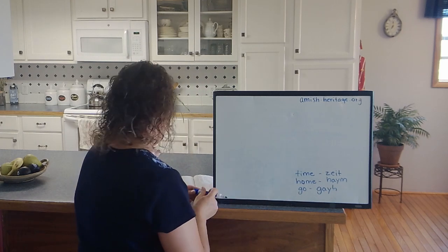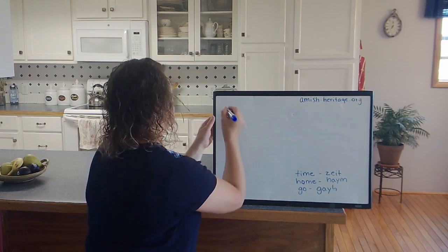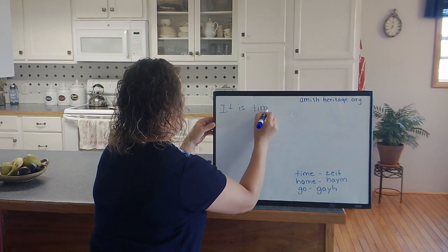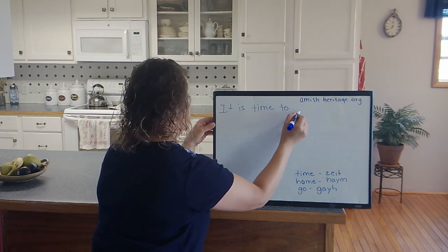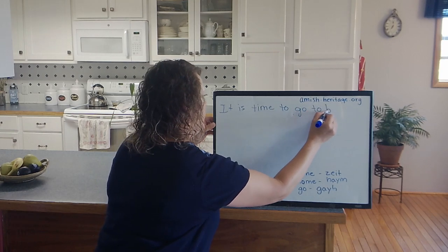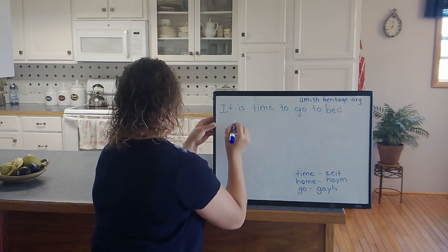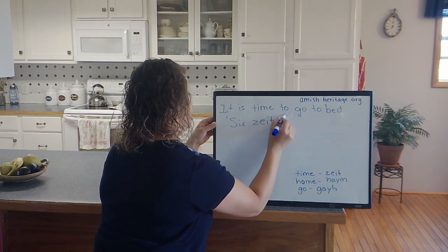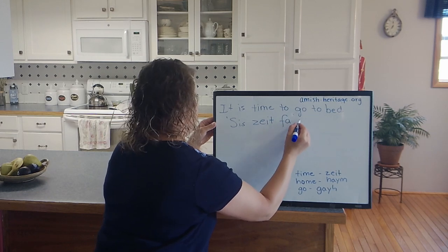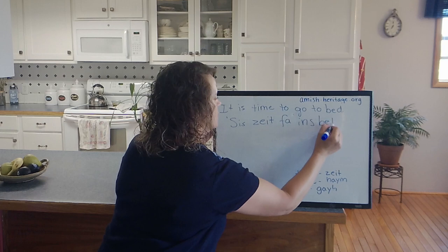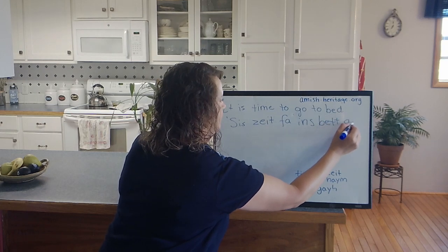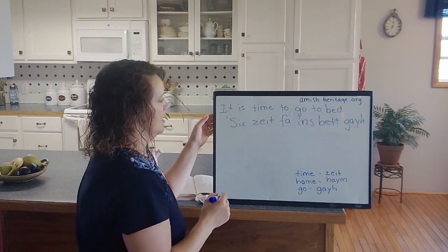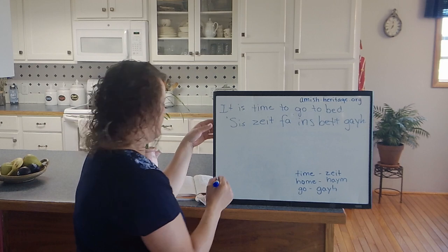I'm going to have a couple phrases with using some of these words. If you would say it is time to go to bed, it is time to go to bed would be sis tight fa ins bet ga. Sis tight fa ins bet ga.